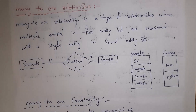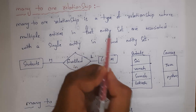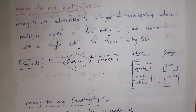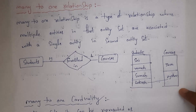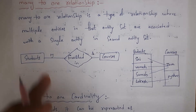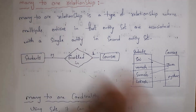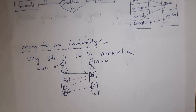Next is many-to-one relationship. Whereas in one-to-many one student selects multiple courses, in many-to-one many students will select one course. Many-to-one relationship is a type of relationship where multiple entities in the first entity set are associated with a single entity in the second entity set. For example, the student entity set contains Sai, Ramesh, Suresh and Lokesh, and the courses entity set contains Java and Python. Lokesh selected Python, while Sai, Ramesh and Suresh all selected Java. Many students selected one course, so we call it many-to-one. Multiple entities in the first entity set are associated with a single entity in the second entity set.